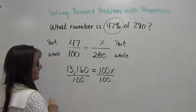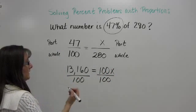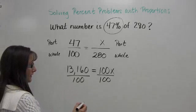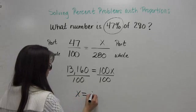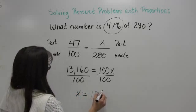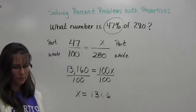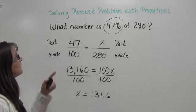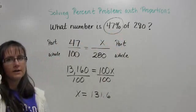Remember, dividing by 100 is like moving the decimal place, just moving it twice to the left, because the number is going to get smaller if I'm multiplying. That means x is going to be equal to 131.6. 131.6 is the number that is 47% of 280.